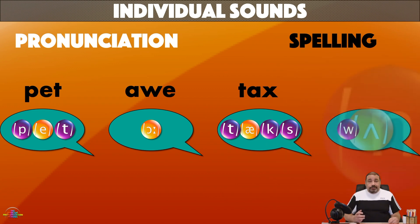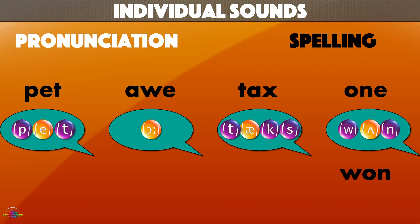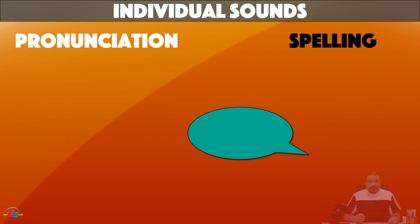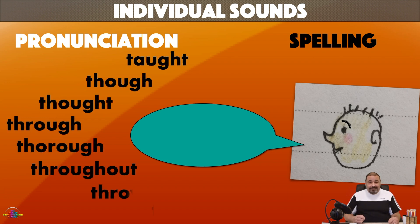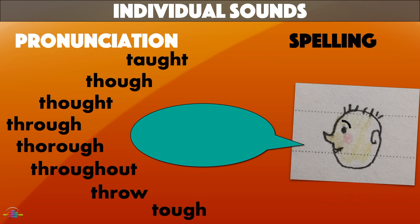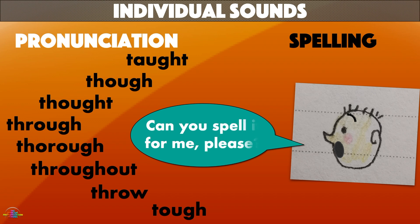And even other words share the same set of sounds. In English, this difference between spelling and pronunciation sometimes gets a little too complicated — tough, though, thought, through, thorough, throughout, and tough. And that's why in English everybody asks: can you spell it for me please?